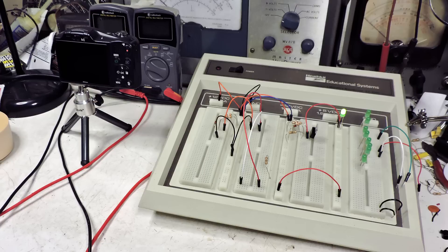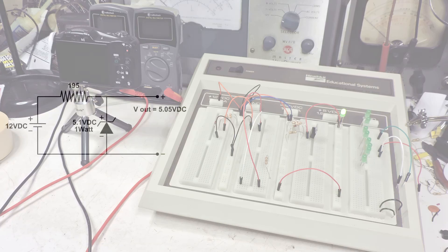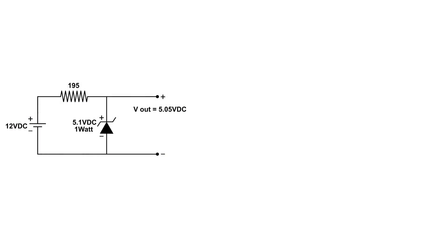Before we get into the constant current circuit, it's a good idea to take a look at the Zener diode we're going to be using. It's a very small Zener diode — just one watt — and I've chosen to use a 5 volt Zener diode. In this circuit it puts out 5 volts, and in this next video we're going to see what happens when we add a diode to the output.